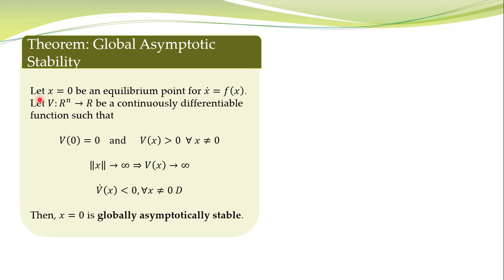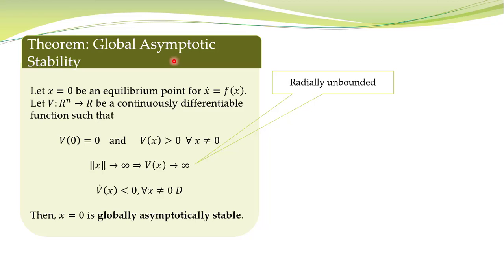Here is the statement of the theorem. Let x equal to 0 be an equilibrium point for this nonlinear system. Let's take a candidate Lyapunov function which is continuously differentiable and satisfies these conditions — then the equilibrium point is globally asymptotically stable. The difference from the previous theorem is this additional condition: as x tends to infinity, V of x also tends to infinity. This condition is called radial unboundedness.